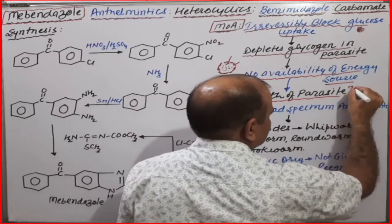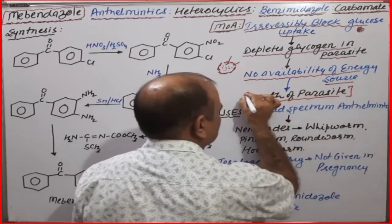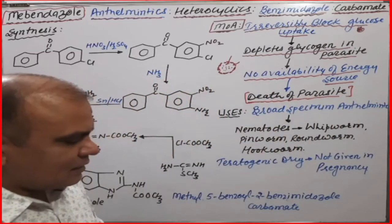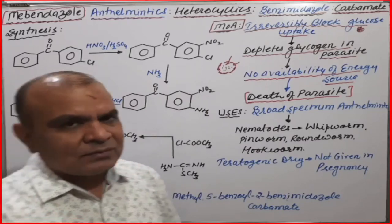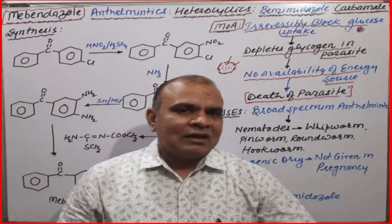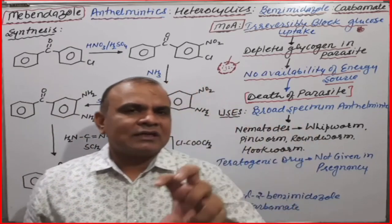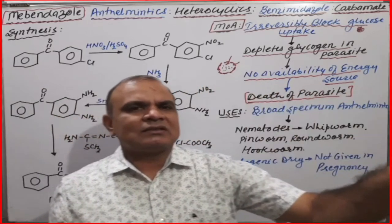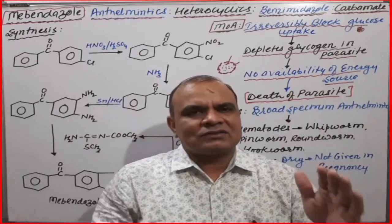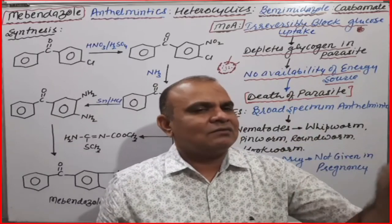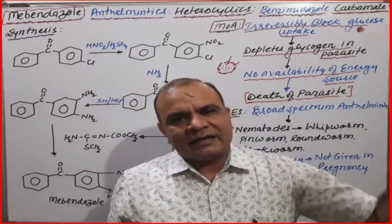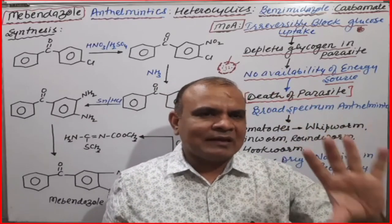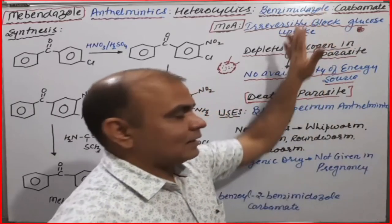After a certain time, there is no glucose and no glycogen, because complete glycogen has been used by the respective cell. With no availability of an energy source, ultimately death of the parasite occurs. This is our goal — the death of the parasite. It is very simple: if we do not give food to any person, after a certain time they will die. That is a similar mechanism for the parasite also.